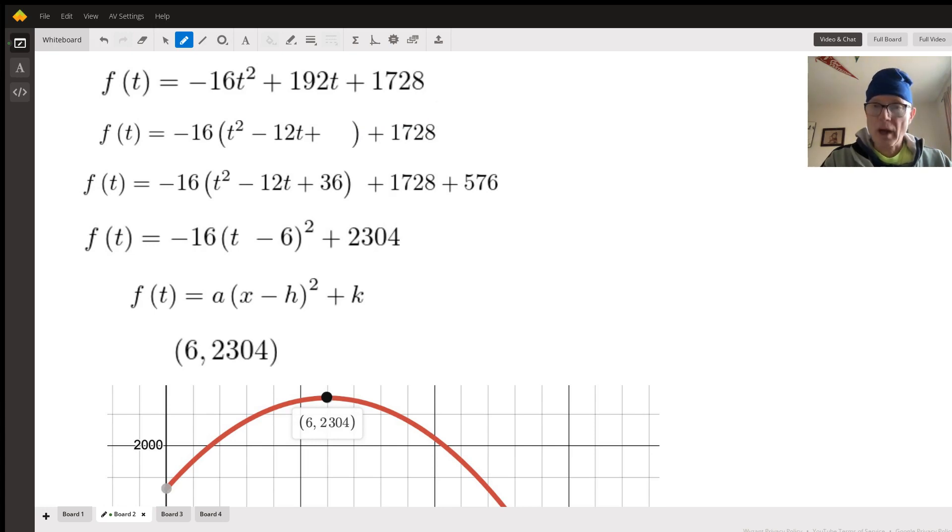So one question that comes to mind is how high does this object go after it was thrown? And one strategy for finding that out is completing the square. So the first step in that is to divide out negative 16 from these first two terms of the equation.